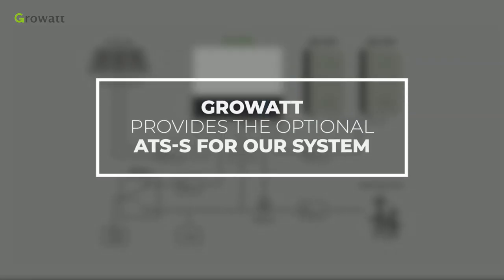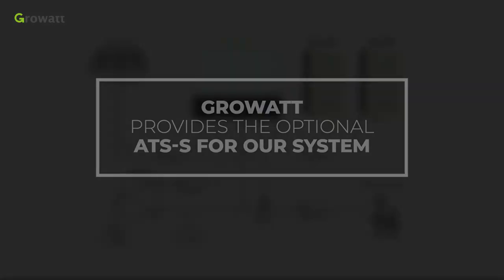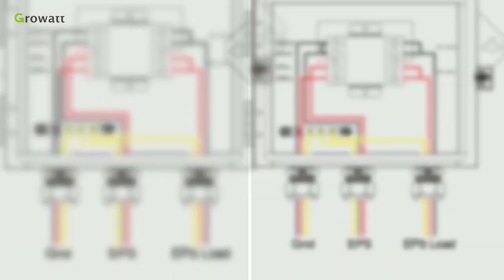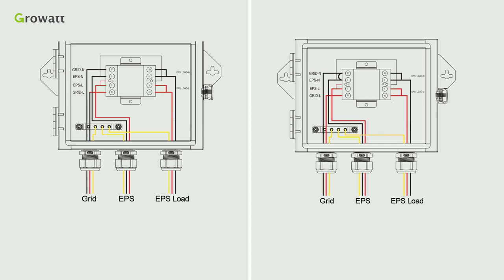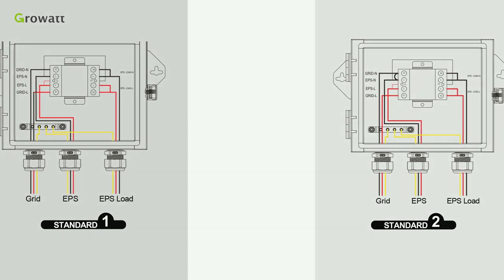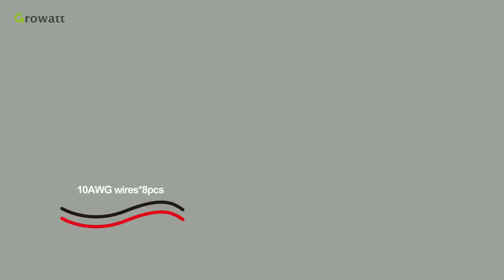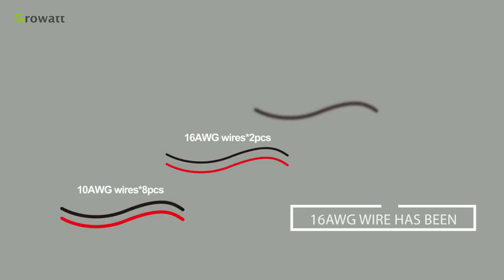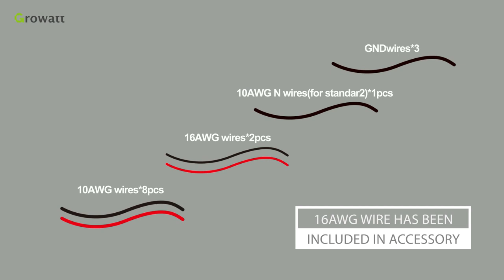If the customer requires the backup power function, Growatt provides the optional ATS for our system. We can follow the diagram to connect the ATS. Standard 1 is for general use and Standard 2 is for the market like Australia where the neutral line can't be switched. Wires are needed before installation. 16 AWG wire has been included in accessory.